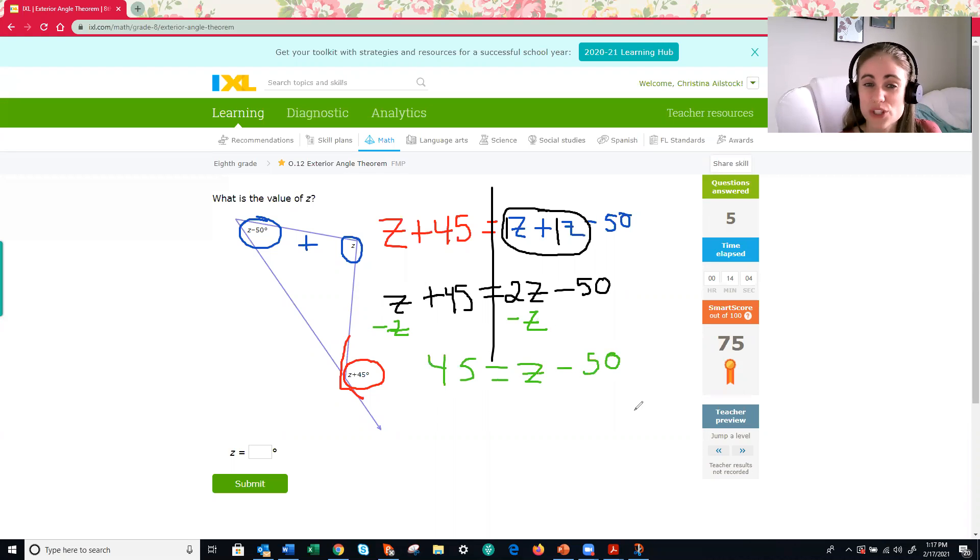We're almost done because when you solve equations, you're trying to get that variable isolated. You're trying to find the value of the variable. So in this case, z. Z is almost by itself. What do we need to do? Yeah, we got to get rid of that minus 50. Whenever you move something to the other side, the inverse operation is performed. So if we're subtracting 50, the inverse of that would be adding 50. Add 50 to both sides. 45 plus 50, 95. And that's equal to z because negative 50 plus 50 eliminates.